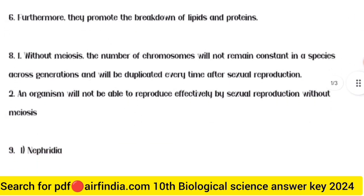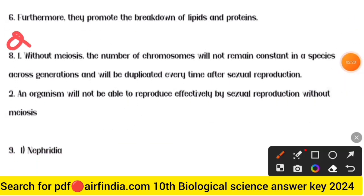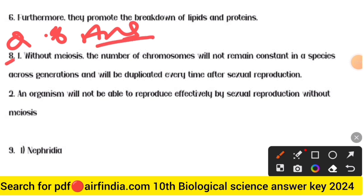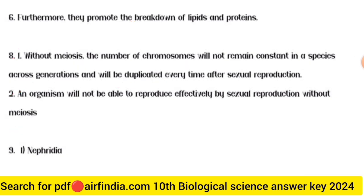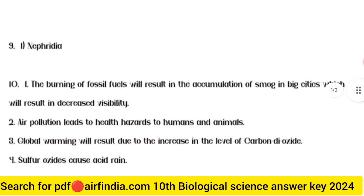Question eight answer: without meiosis, the number of chromosomes will not remain constant in the species across generations and will be duplicated every time after sexual reproduction. Second point — an organism will not be able to reproduce effectively by sexual reproduction without meiosis. Question nine answer: nephridia.